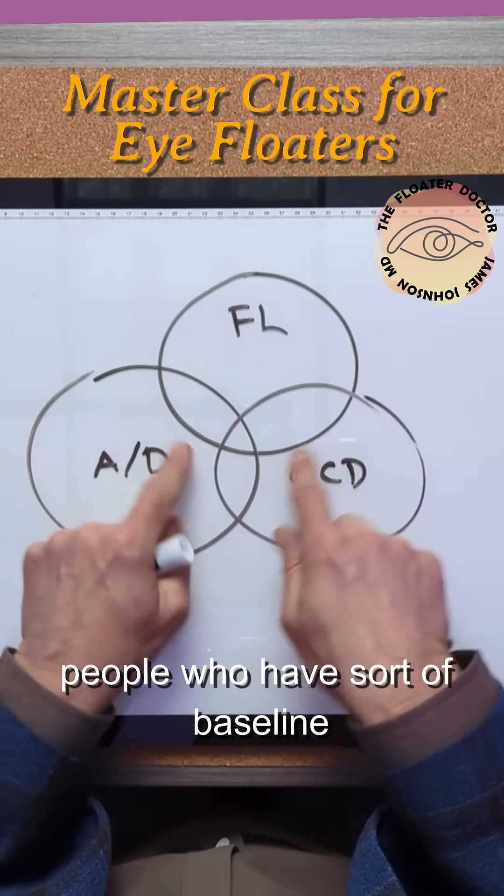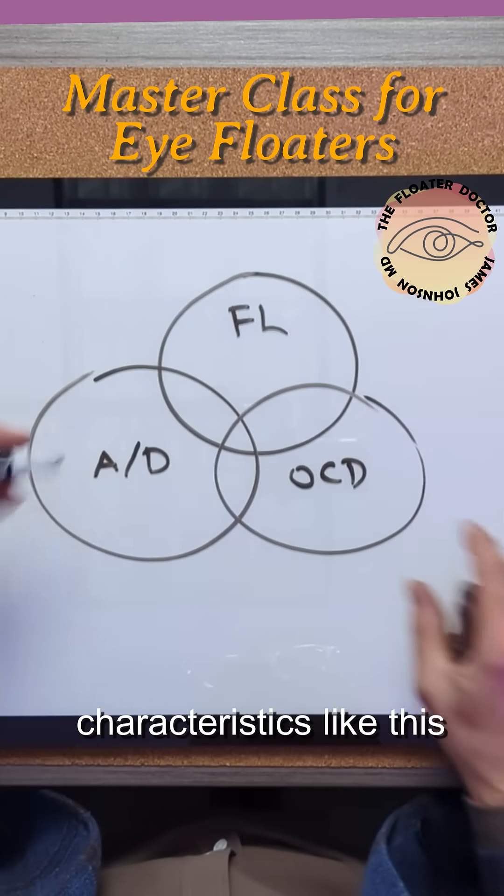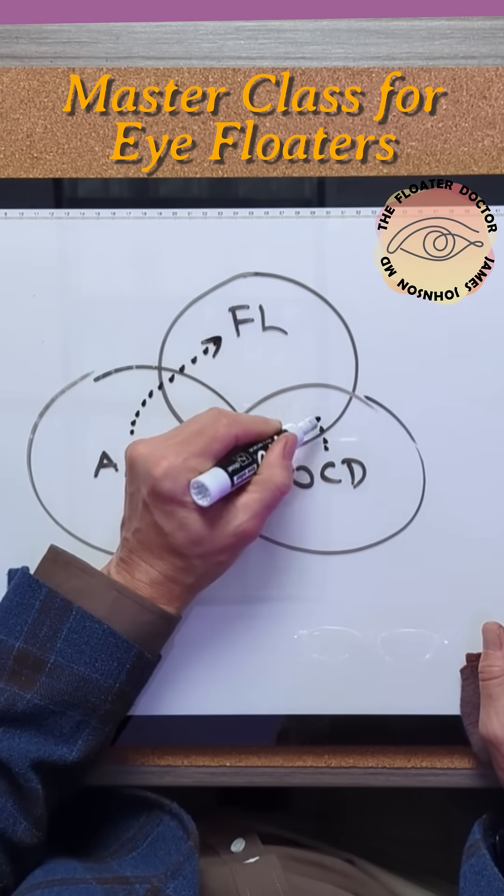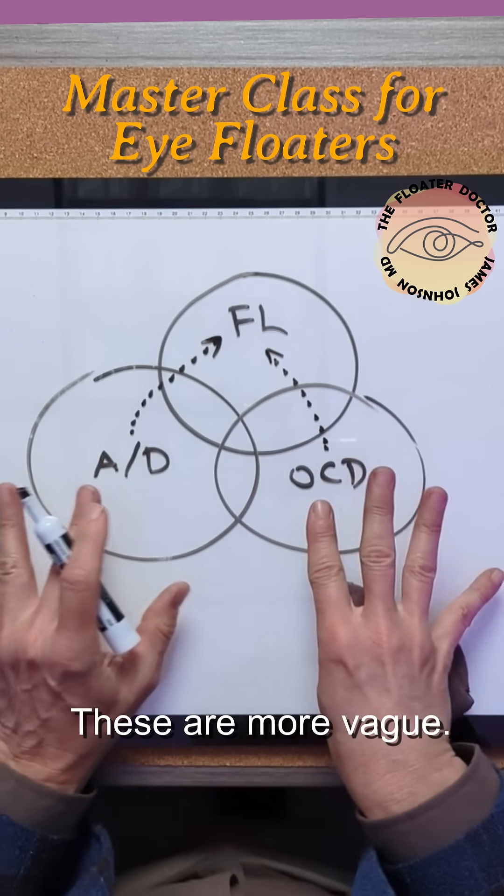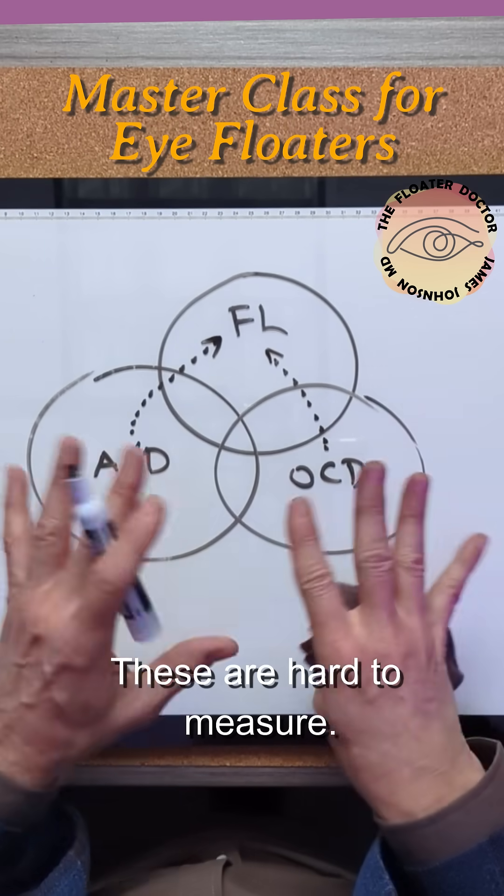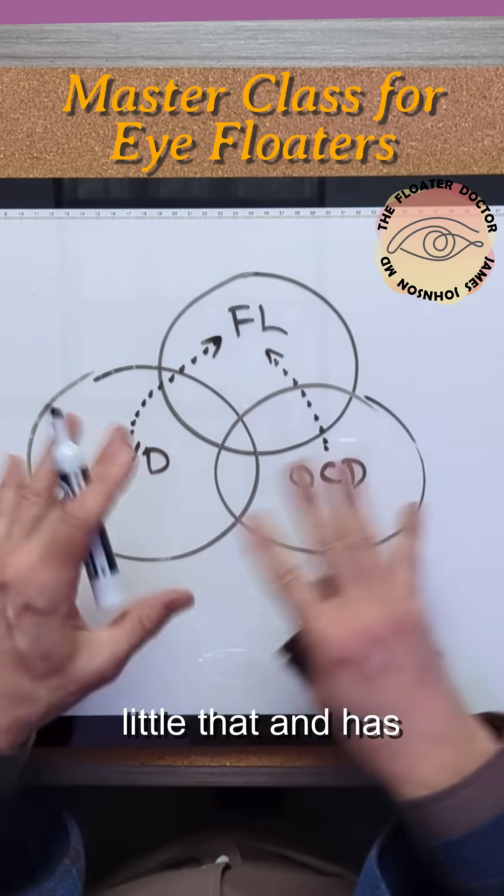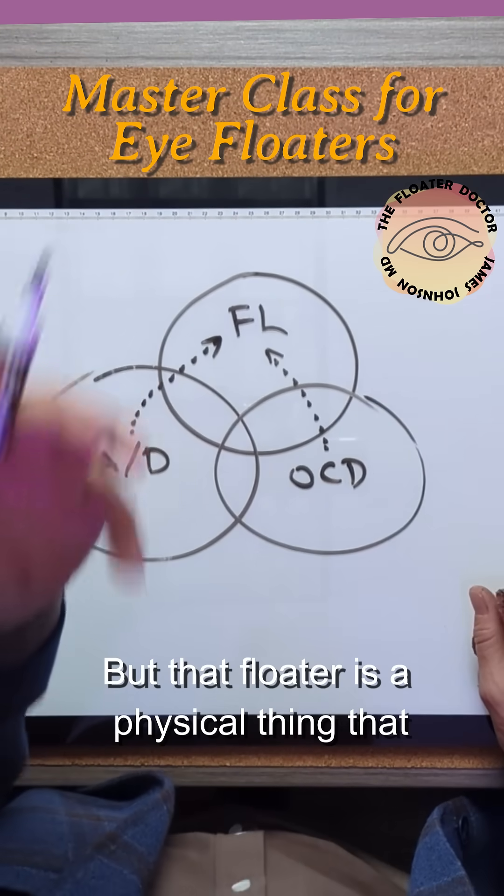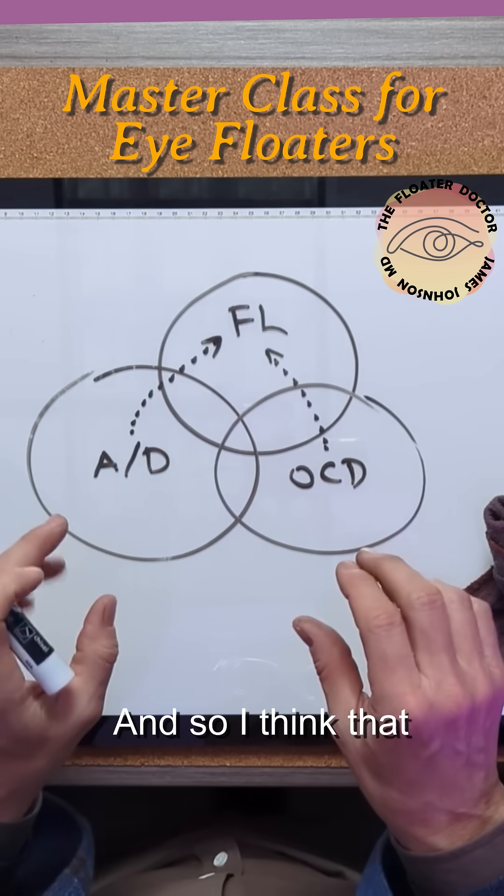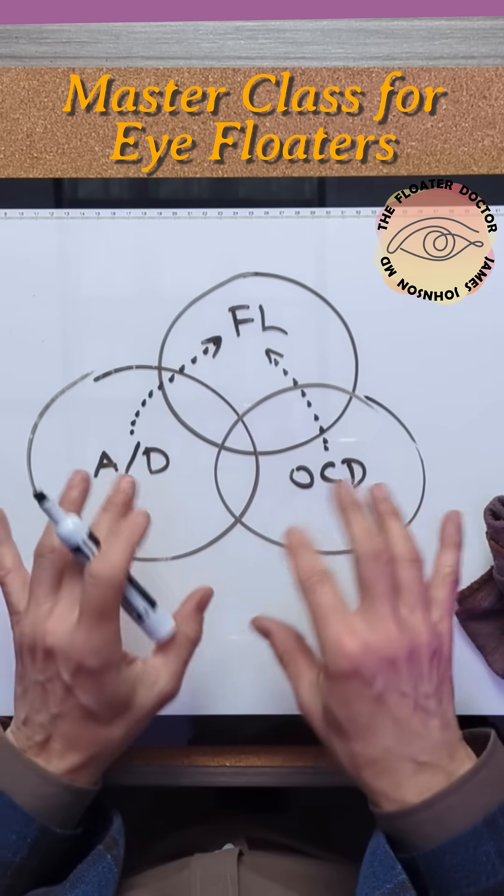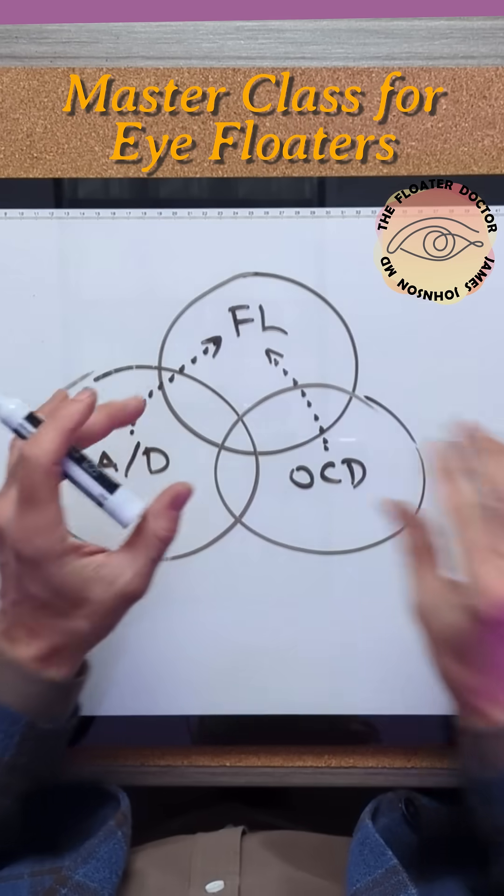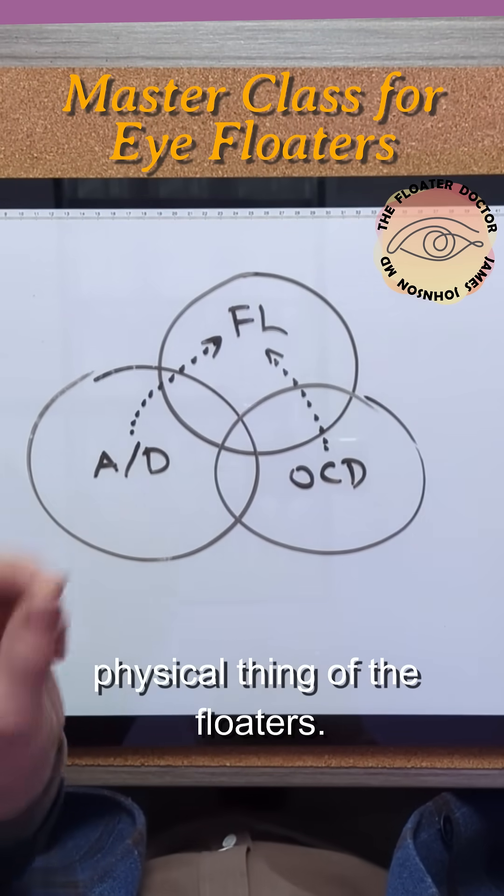I think that people who have sort of baseline characteristics like this may tend to really focus on that physical thing. These are more vague, these are hard to measure. Everybody's got a little this and got a little that and has good days and bad days. But that floater is a physical thing that is there. And so I think that this loosely defined group of people tend to really focus on that physical thing of the floaters.